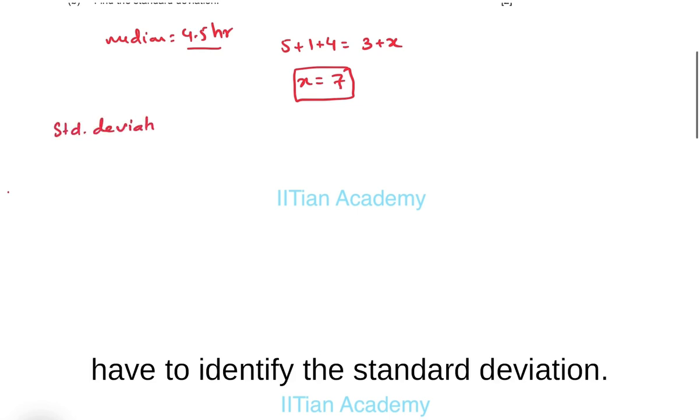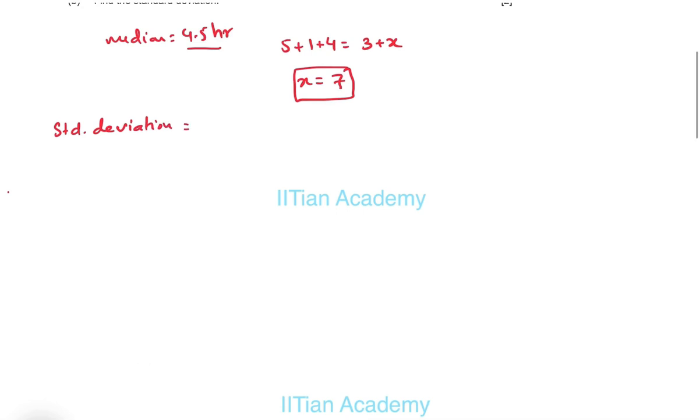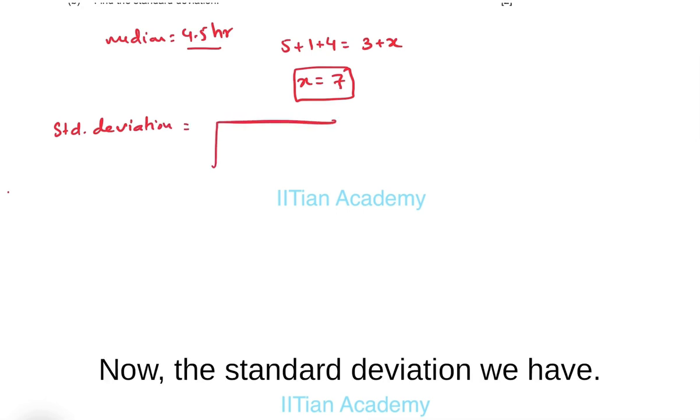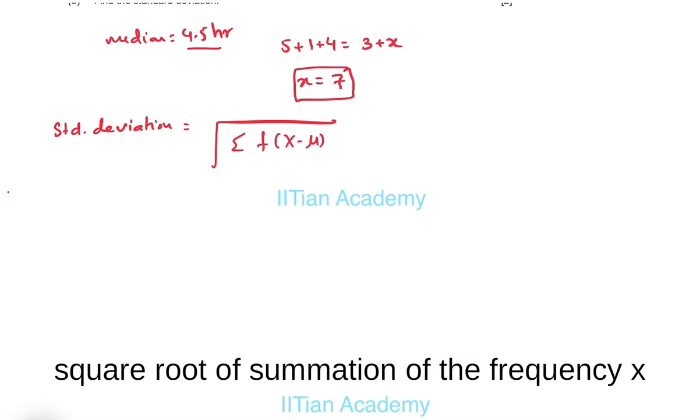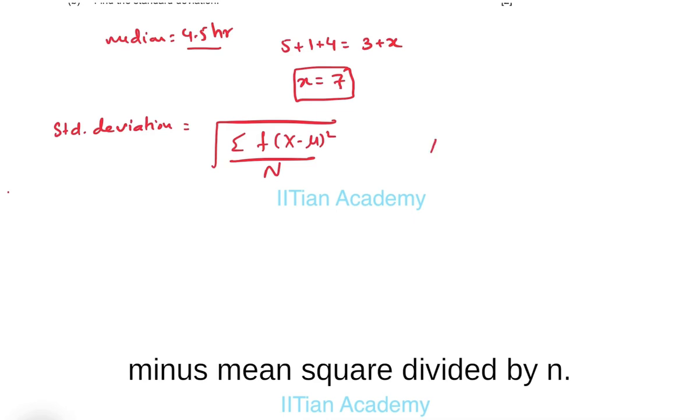Now in the part B we have to identify the standard deviation. Now the standard deviation, we know the formula for the standard deviation is square root of summation of the frequency (x minus mean) squared divided by n.